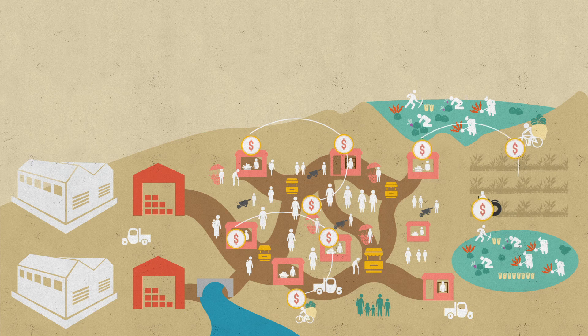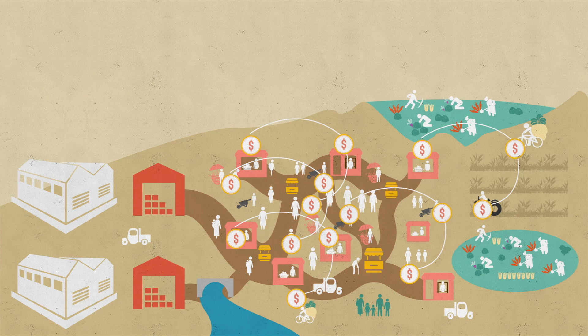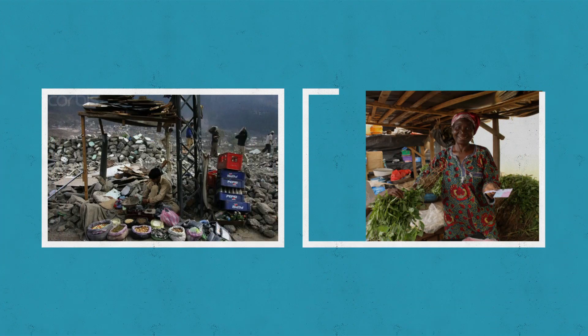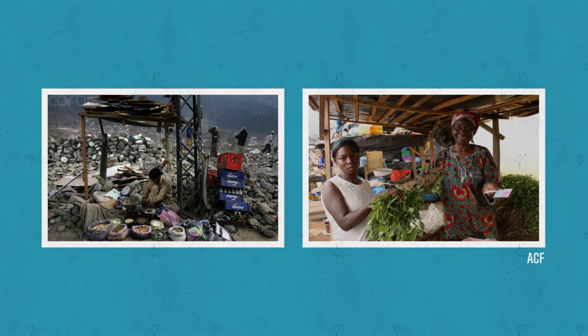Each time the money is spent it generates more economic activity in the market. It has a knock-on effect to more people within the economic area. And let's remember, beneficiaries and traders aren't two different groups. In many communities, beneficiaries are also trading, working, and benefiting from the economic activity in their area.